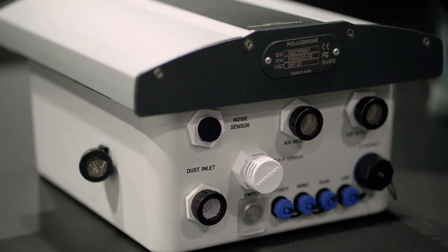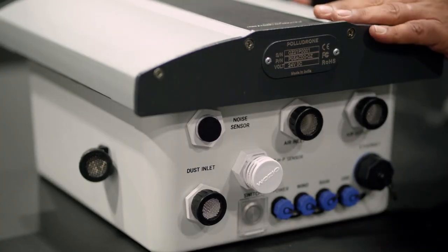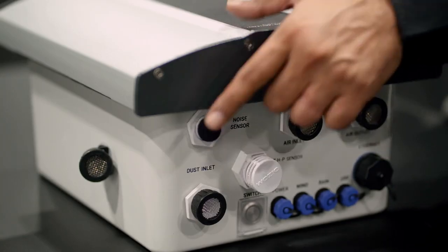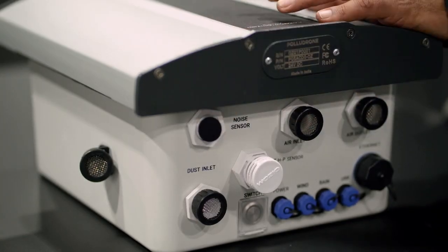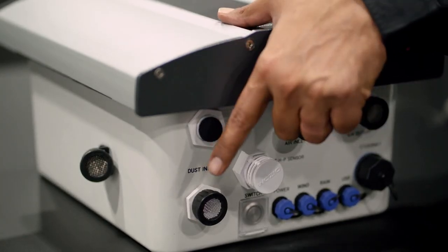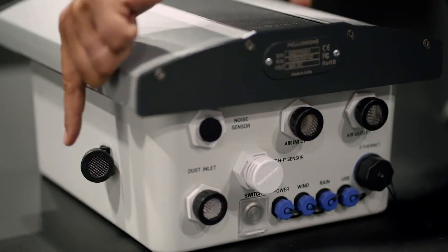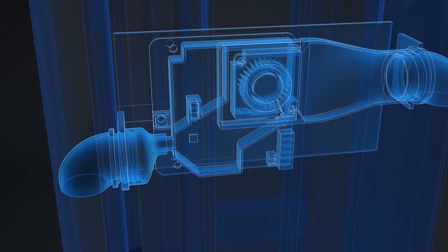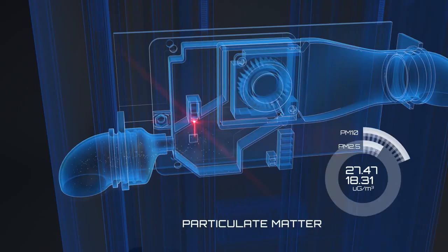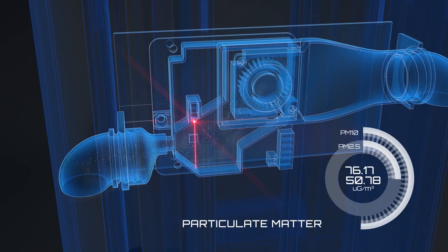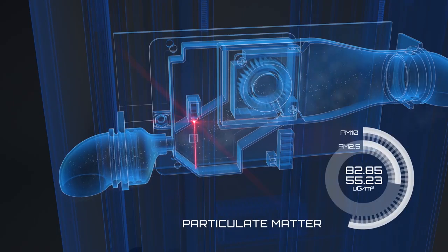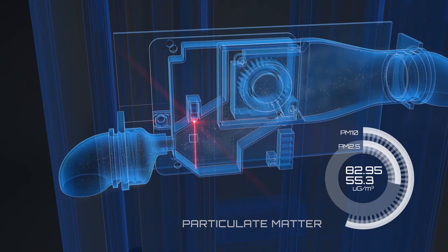It is an active sampling method where constant air flow is passed through the system. The air sample enters through this inlet and exits from this outlet. Inside is a laser beam which continuously counts the particulate matter present in the air sample to derive the concentration of PM1, PM2.5 and PM10.